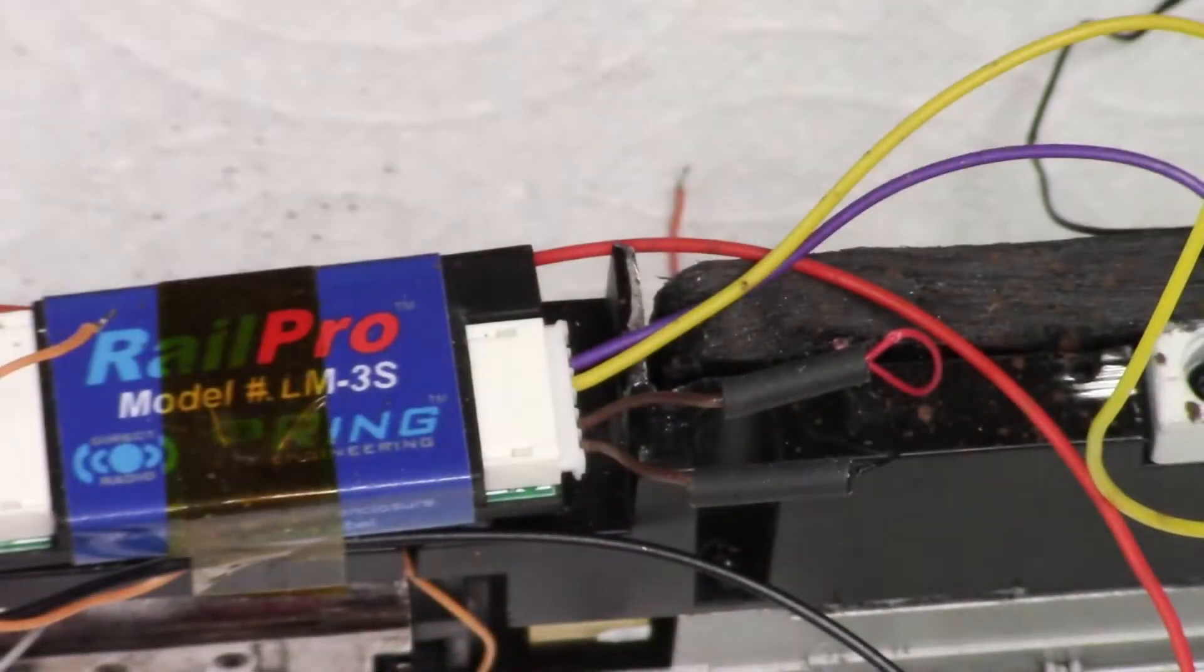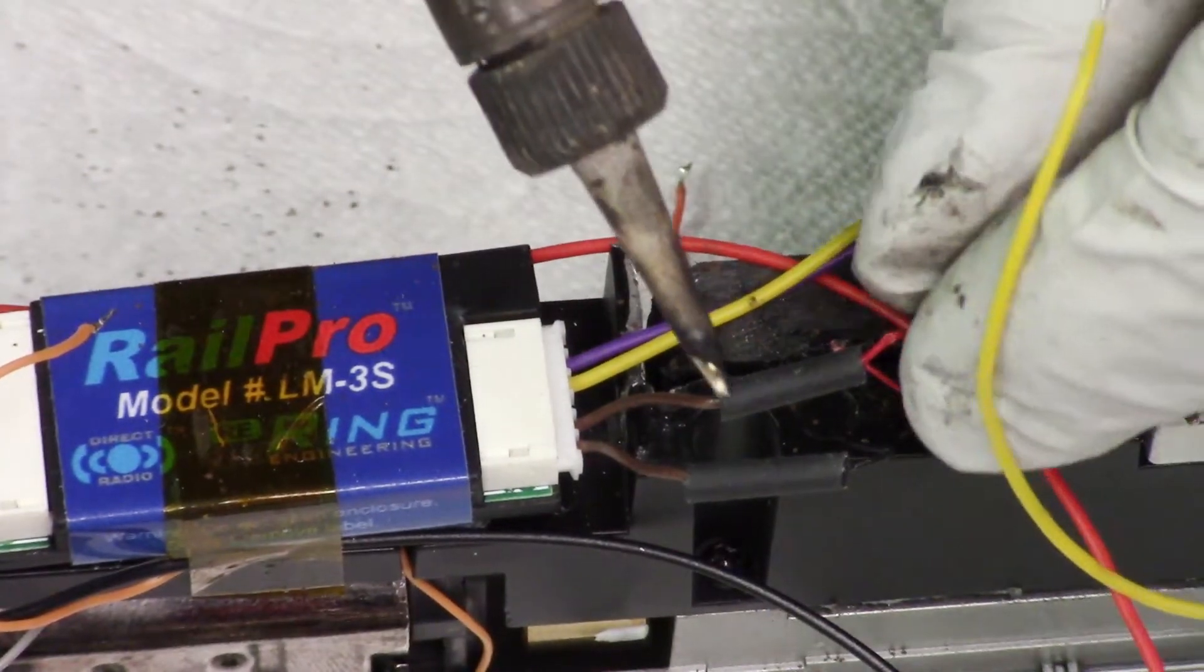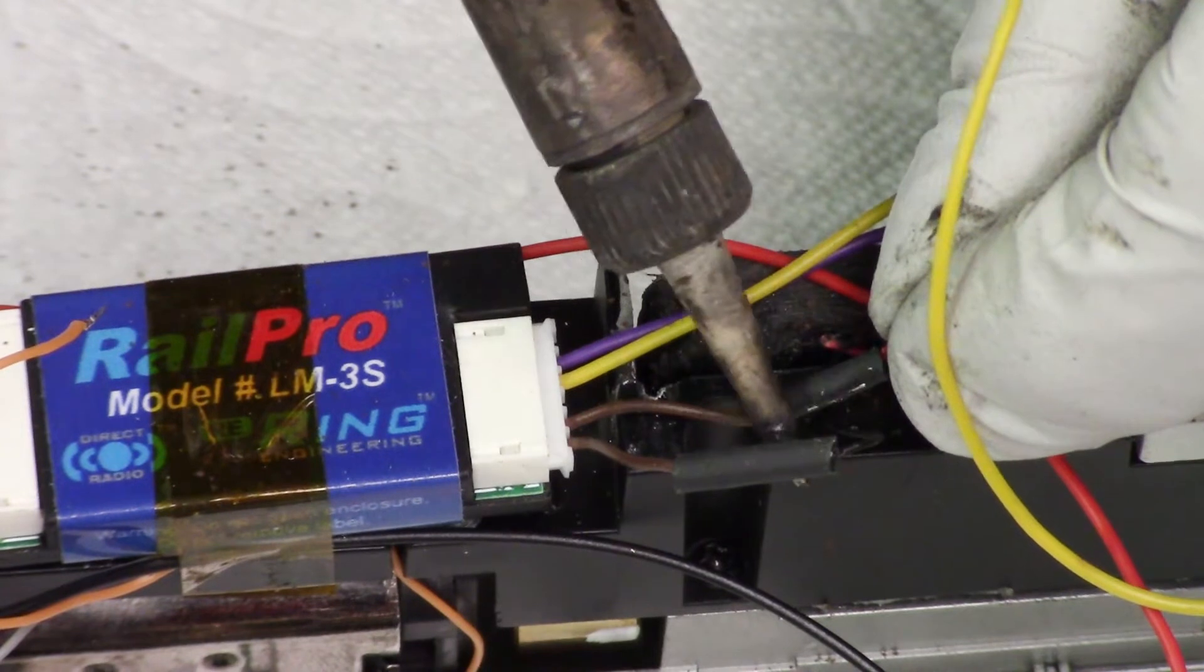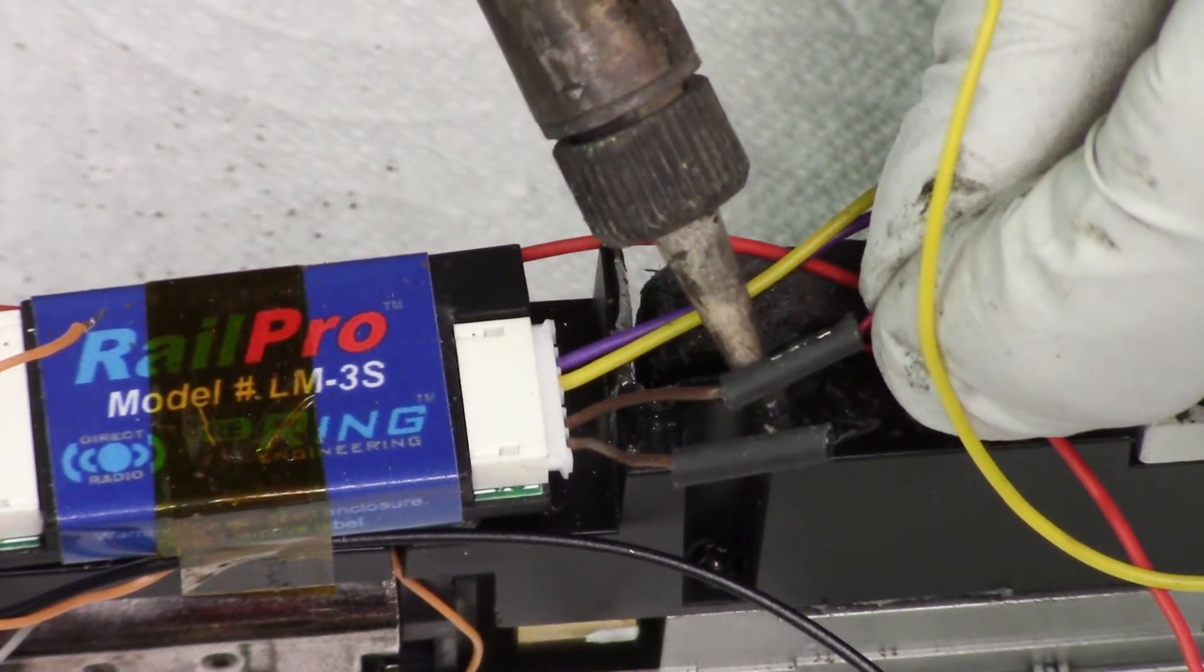I use the smallest diameter heat shrink I can find in order to keep it nice and snug against the wires. I typically will just use the side of the soldering iron because I have it handy and it will heat it up pretty quickly and shrink it down to size.